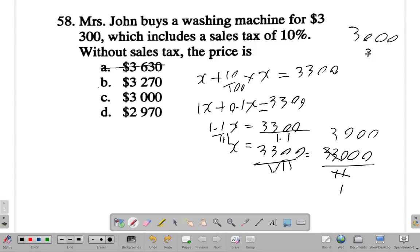10% of 3000 is 300, and when you add it you get 3300, right? That would save you quite a bit of time from first. But anyway, the answer for question 58 is C.